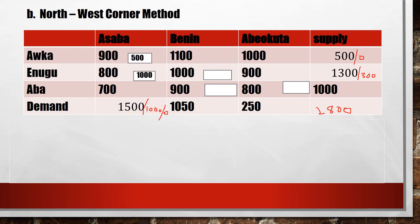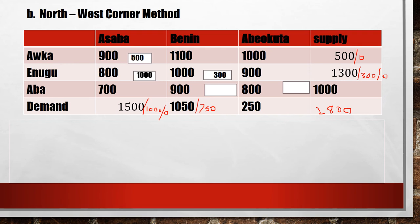The first row and first column are now complete — everything there is exhausted. Moving to the next diagonal cell: the demand is 1050 and the supply is 300, so the minimum is 300. I fix 300 in that cell. Subtracting 300 from the supply gives zero remaining, and subtracting 300 from the demand leaves 750 remaining.